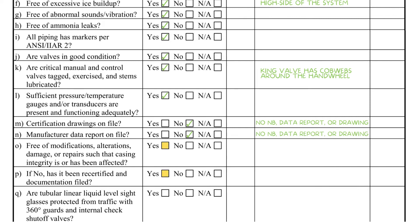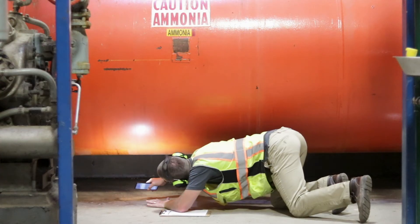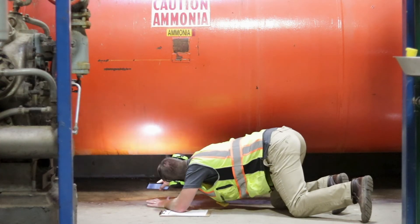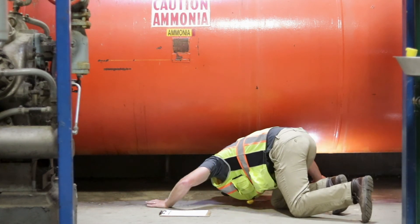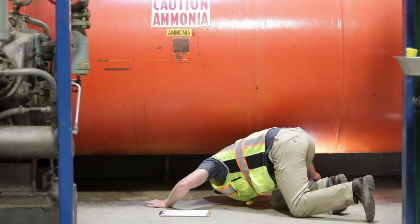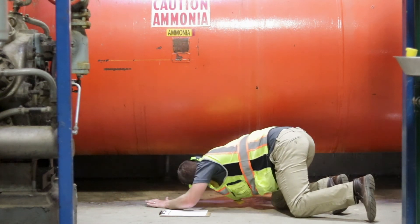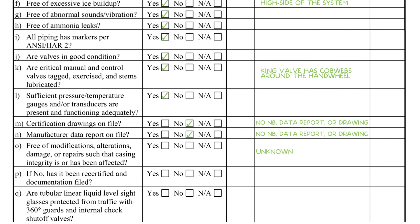Item O asks the inspector if the vessel is free from modifications. While this cannot be conclusively answered in the absence of a data report, the inspector can still look for indications that alterations have occurred. If there is evidence of vessel modifications, the appropriate checkbox in item P must be answered.